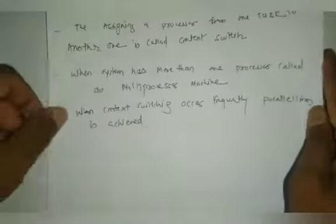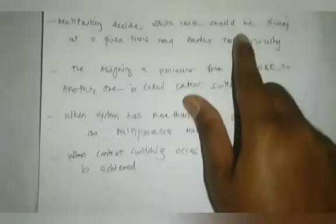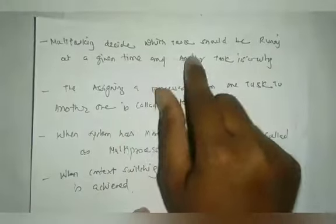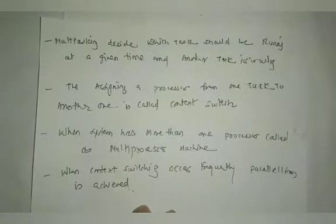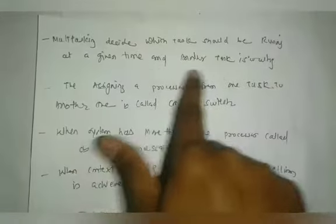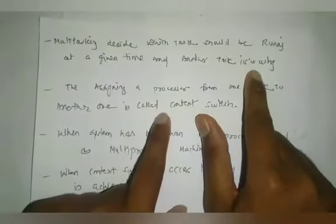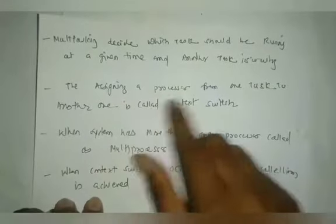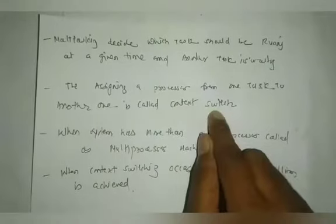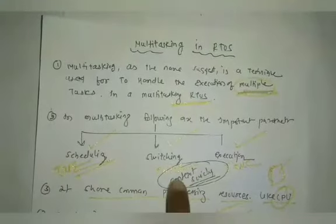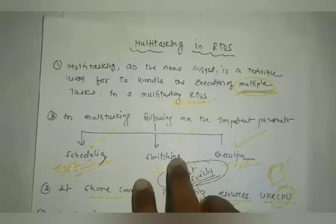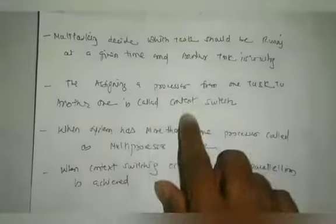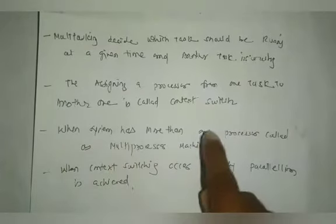Some important features: multitasking decides which task should be running at a given time and which is in waiting. One task is running while others are waiting. The process of assigning and switching from one task to another task is called context switching, which is used for switching from one task to another.